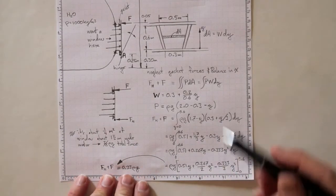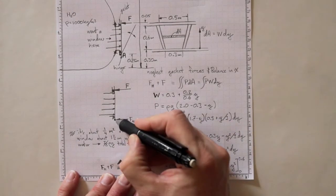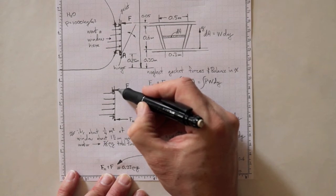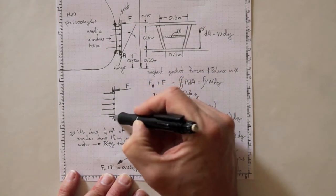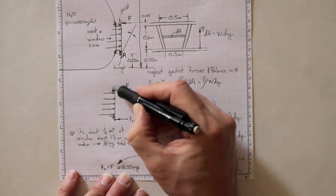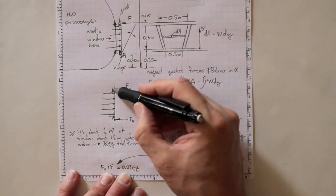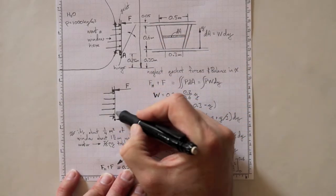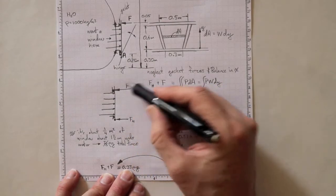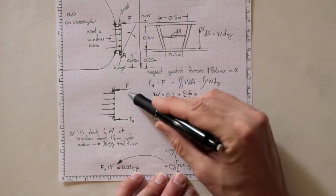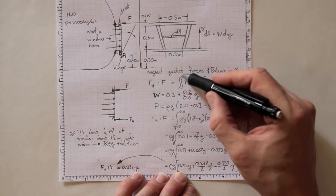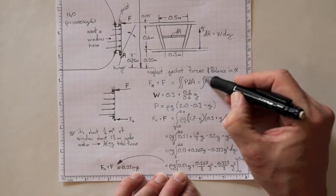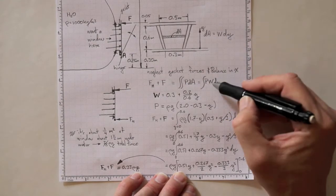Looking at a force balance on the window assembly, there's going to be a pin-jointed hinge down here with some force acting at it to hold the window in, and some other fastener up here pushing in with another force. We're neglecting the gasket forces, and we have the pressure forces only over the area of the window exposed to the water — a little smaller than the total dimension between the two forces, because the hinge is down below the open area. So the distributed pressure force is balanced by two forces on the opposite side: the force of the hinge plus the force at the top must equal the pressure force acting in the opposite direction — a double integral of pressure over area.